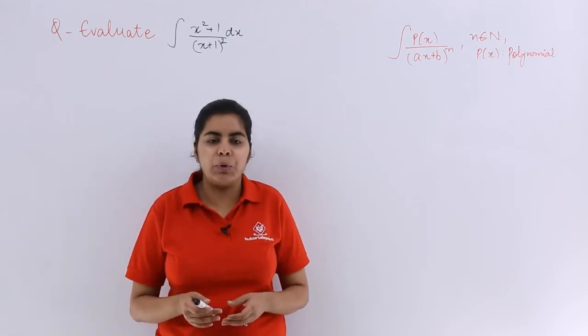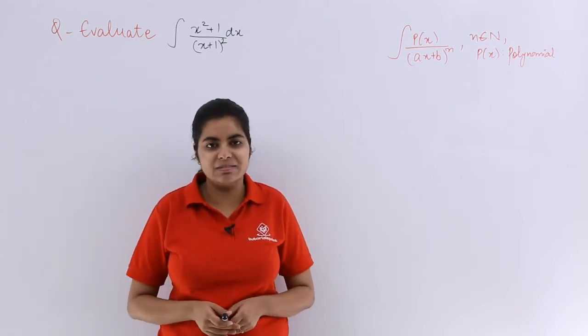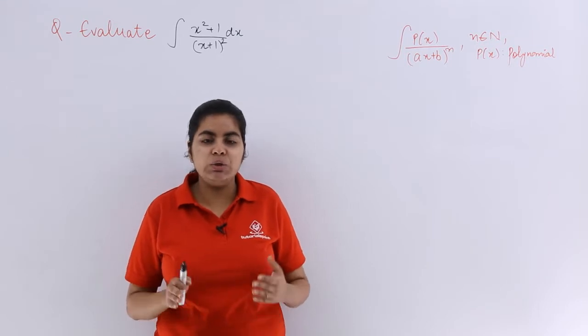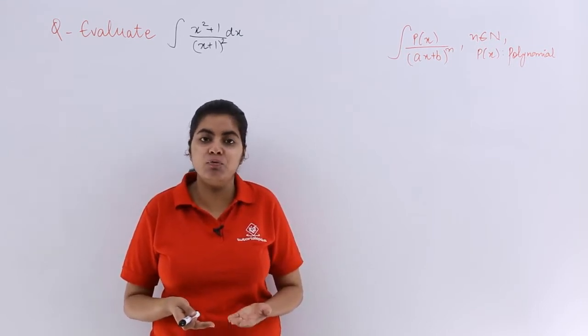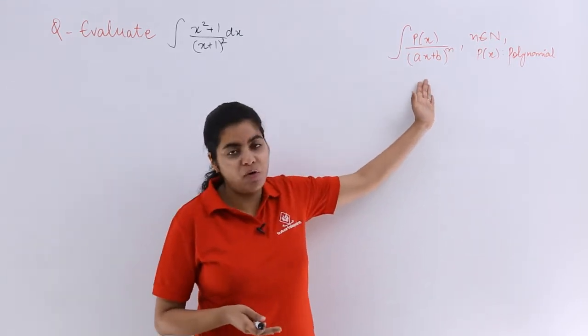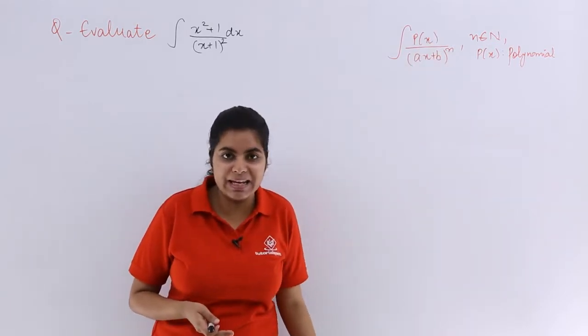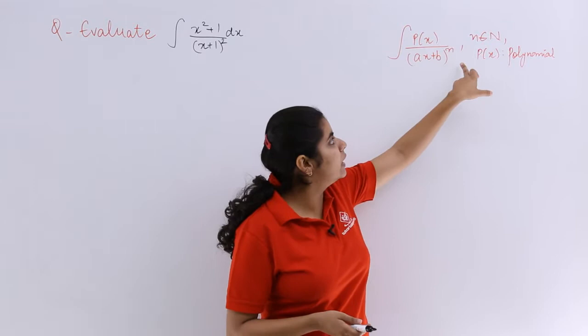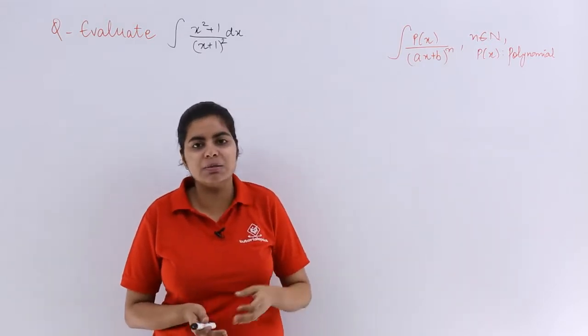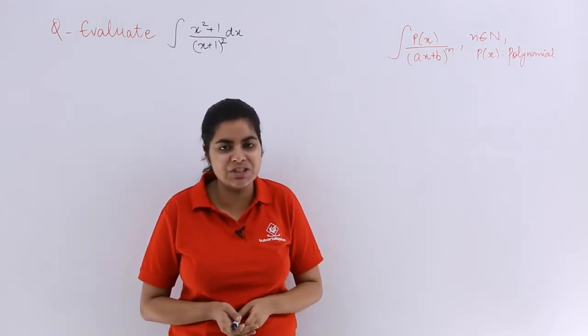We are going to start with some problems based on standard integrals. If you have a problem given in front of you which is of this form: px upon (ax + b) raised to the power n, where px is the polynomial and n belongs to natural numbers, meaning starting from 1, 2, 3, the degree is such.